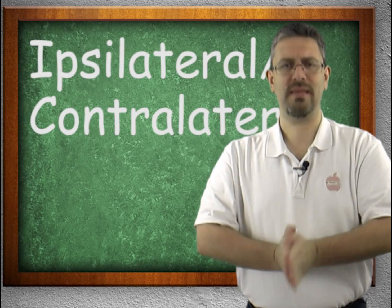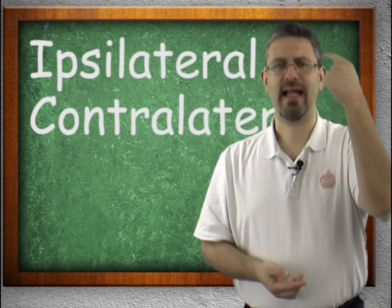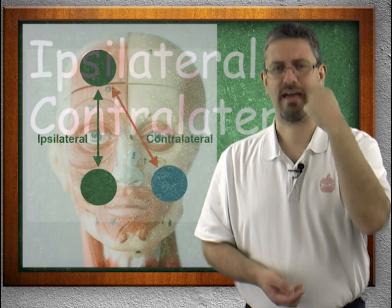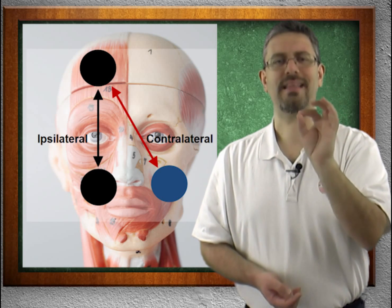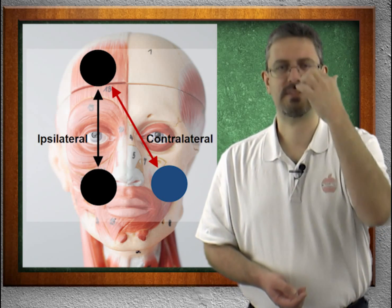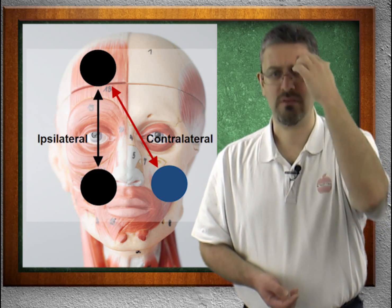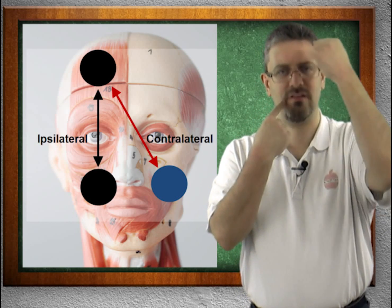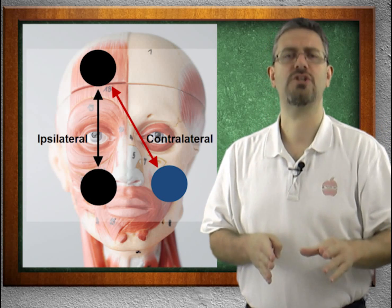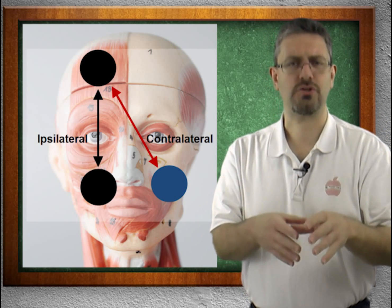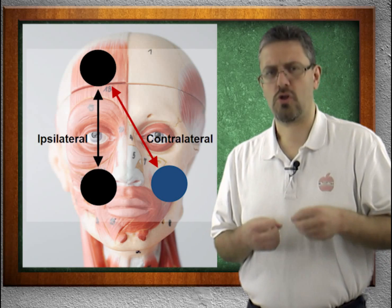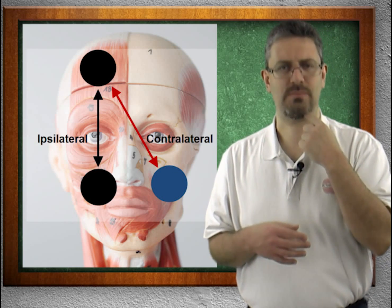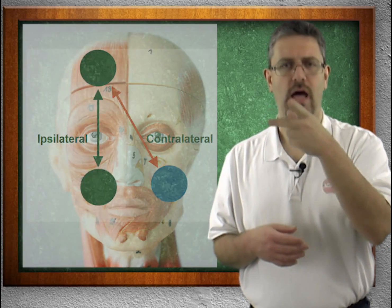Remember our midline. If I have a mark on the same side of the body, they are considered ipsilateral — ipsi meaning same. Ipsilateral means on the same side of the body. If the marks are on the opposite side of the body, they are contralateral — contra meaning contrary, opposite. So ipsilateral means same side, and contralateral means opposite sides.